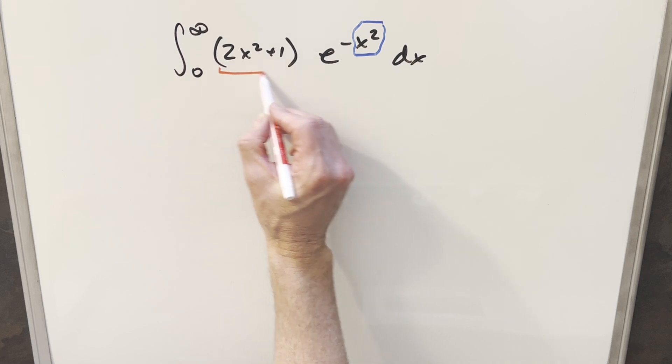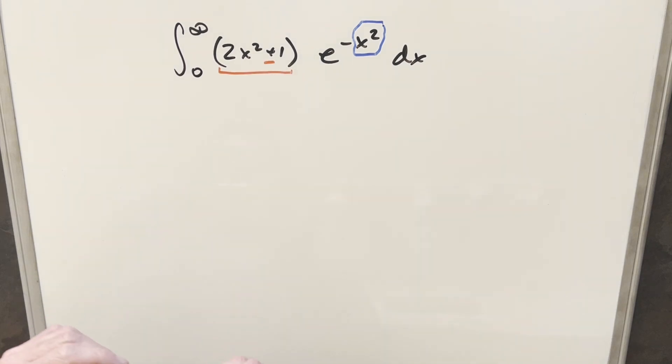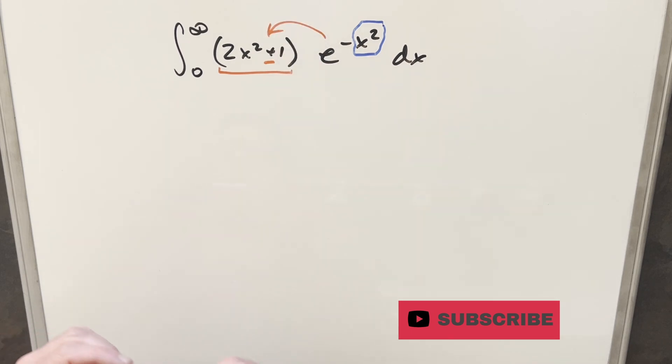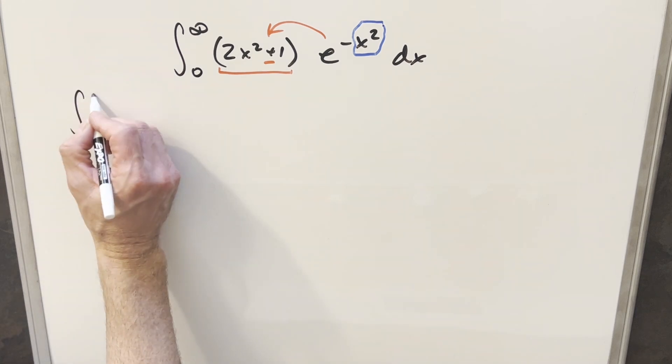Now, also what I noticed here, looking at 2x squared plus 1, because we have addition right here, what we can do actually is if I distribute in this e to the minus x squared, I can then split this into two integrals. So let's do that and rewrite it like that.